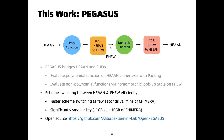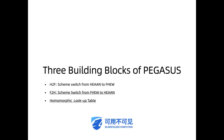Pegasus consists of three main building blocks, including two scheme-switching methods and a homomorphic lookup table. Here, we talk about the last two building blocks.